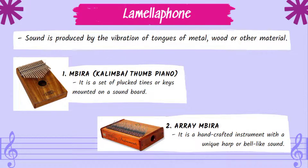The third classification is the lamellophone, where sound is produced by the vibration of tongues of metal, wood, or other material. Two examples: First, Ambira, also known as kalimba or thumb piano — a set of plucked tines or keys mounted on a soundboard. Second, Arie Ambira — a handcrafted instrument with a unique harp or bell-like sound.